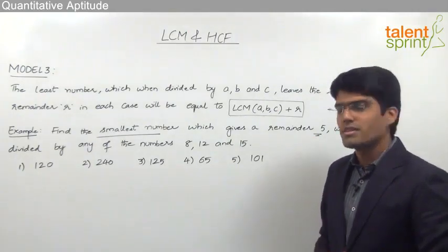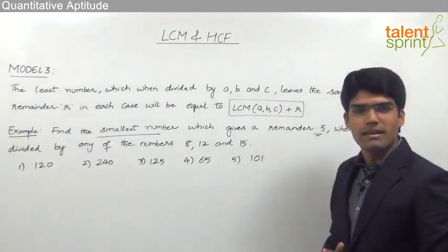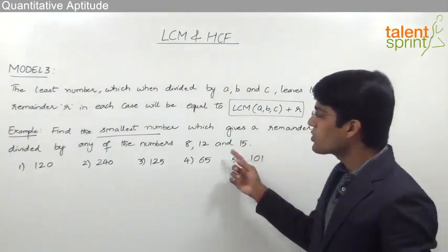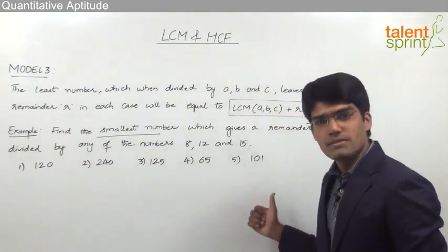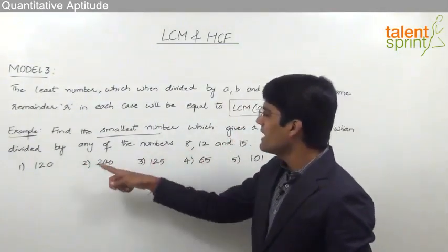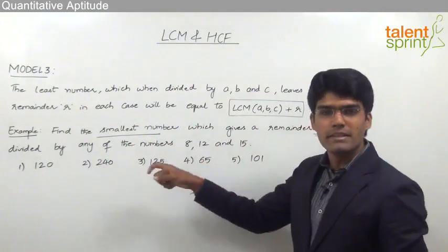So one way of solving the question here is simply go by the statement that is LCM of ABC plus the remainder. Otherwise we can also verify from the given options. Whichever option gives the remainder 5 when divided by 8, 12 and 15 will be the answer.